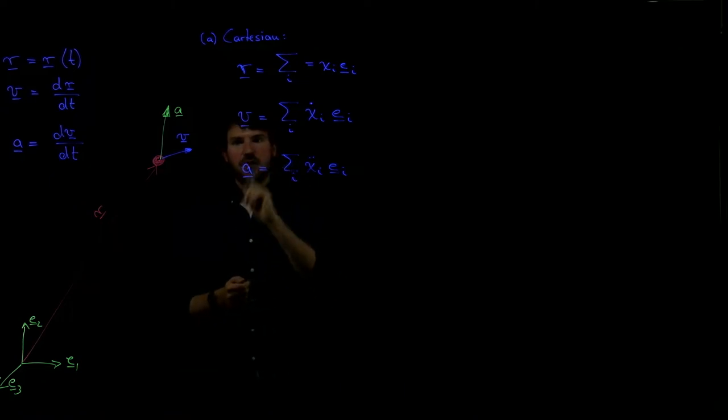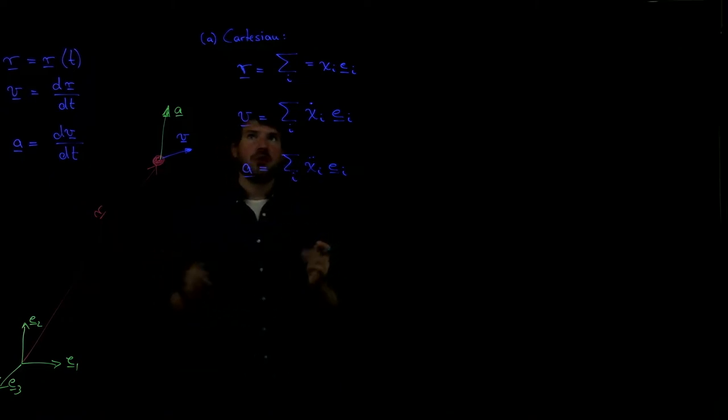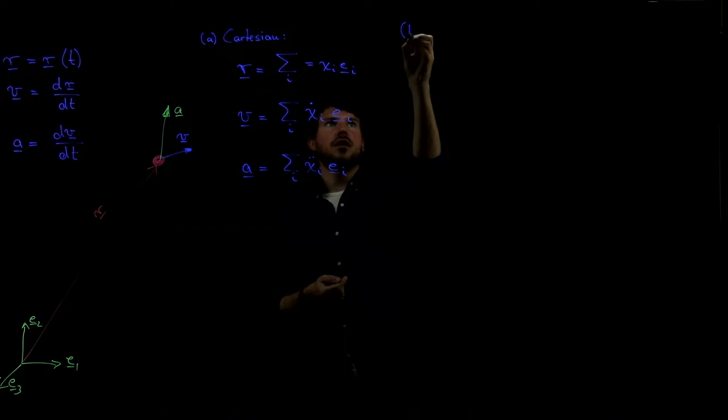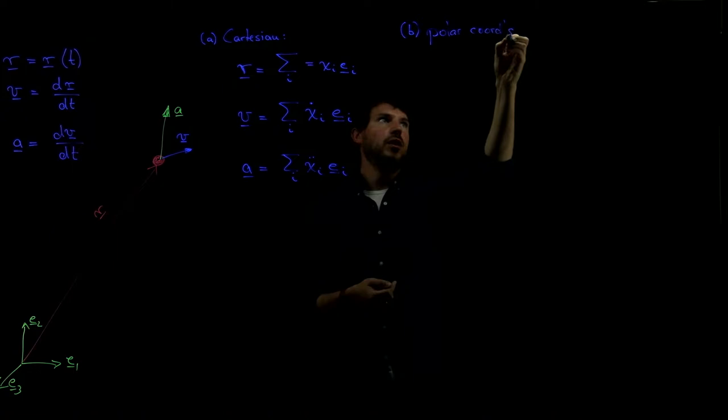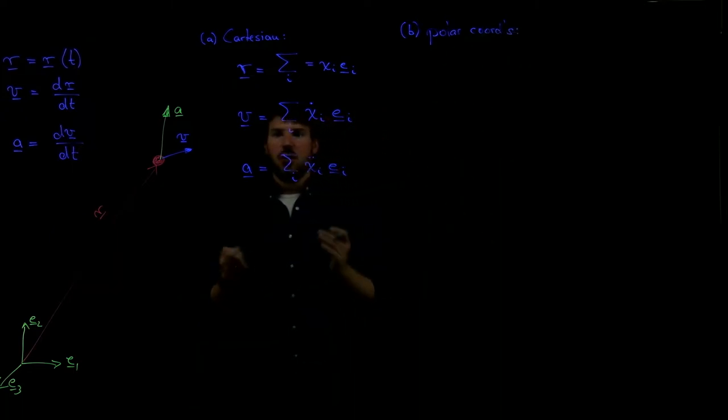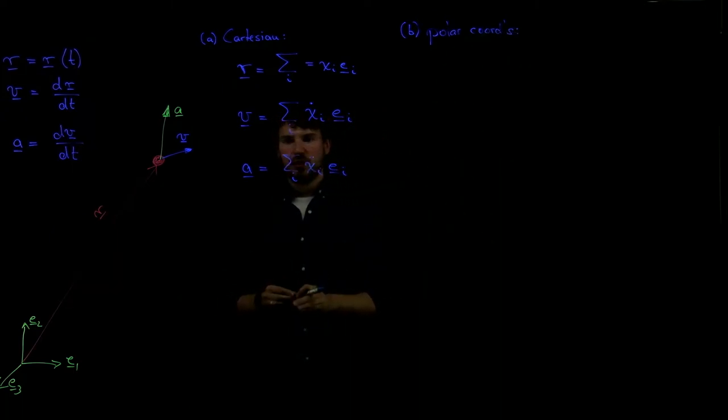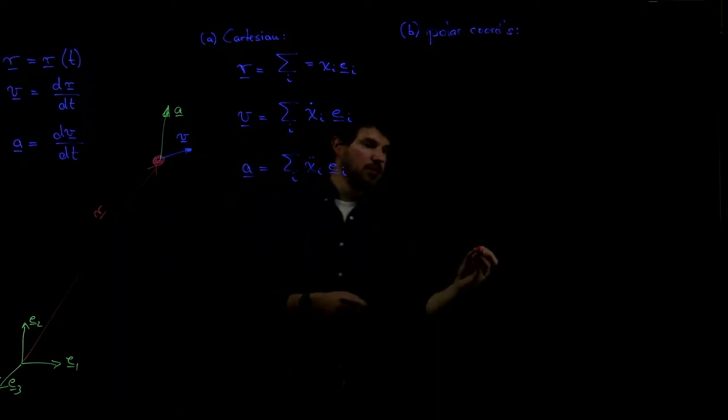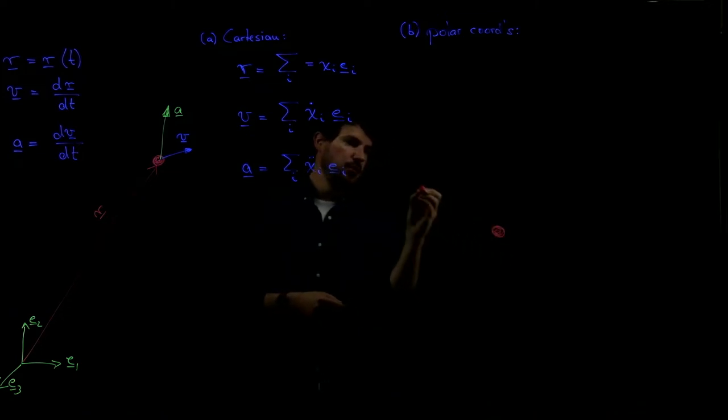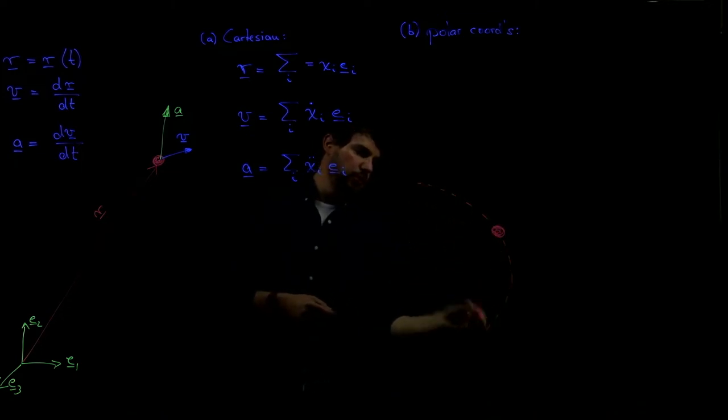Sometimes it's not very convenient to use Cartesian coordinates. And that's why we introduced two other coordinate systems. The second one we talked about was polar coordinates. And polar coordinates are always essential and always beneficial when something is moving on a somewhat circular path.